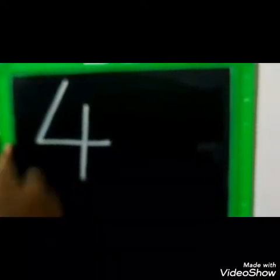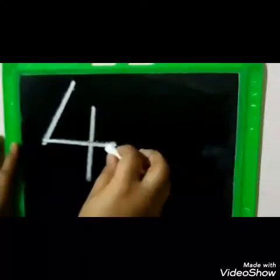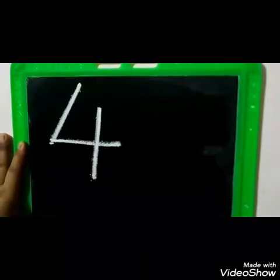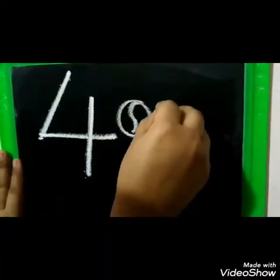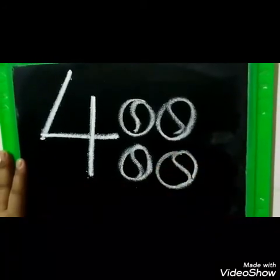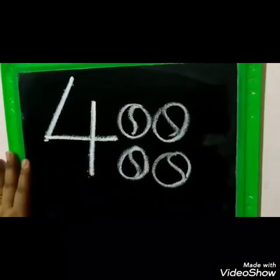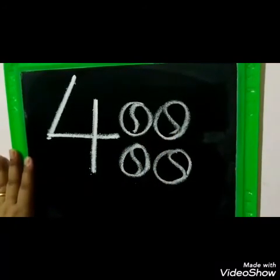Now let us write number 4. Slanting line, slipping line and a standing line — number 4. Once again: slanting line, slipping line and a standing line. Number 4 means 1, 2, 3, 4 — 4 balls. Number 4: 1, 2, 3, 4 balls.